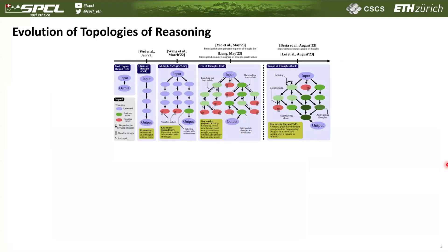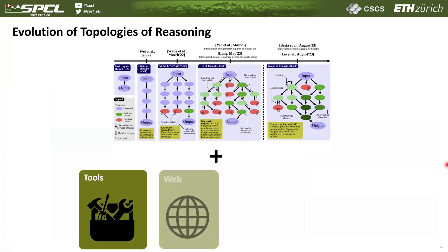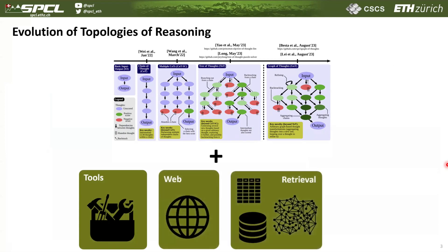We also consider all these prompting schemes in the context of agentic developments, where we want to combine prompting with things like running tools by the LLMs, accessing the web, or doing retrieval with different data sources such as graph databases, relational databases, or others.